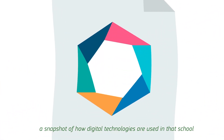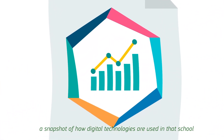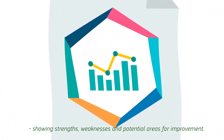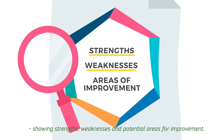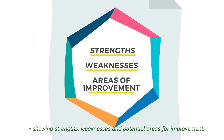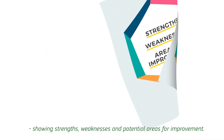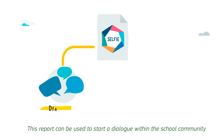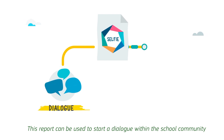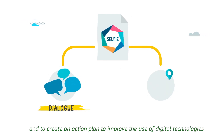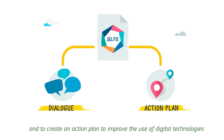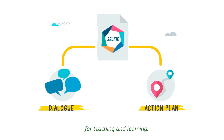The Selfie School Report is a snapshot of how digital technologies are used in that school, showing strengths, weaknesses, and potential areas for improvement. This report can be used to start a dialogue within the school community and to create an action plan to improve the use of digital technologies for teaching and learning.